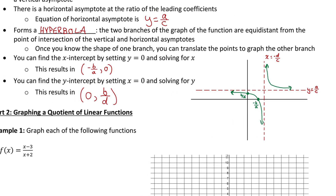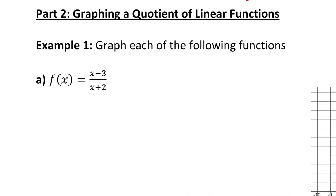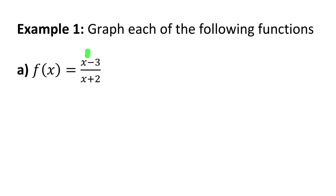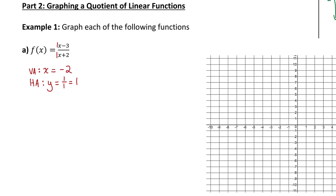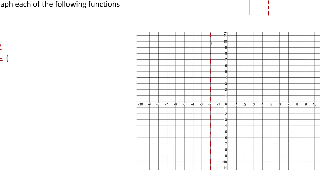Let's go ahead and graph two quotients of linear functions. The first one is x minus three divided by x plus two — both linear functions. Starting with the asymptotes: there would be a vertical asymptote at any x value that makes only the denominator be zero. An x value of negative two makes the denominator be zero and the numerator be negative five, so there's a vertical asymptote at x equals negative two. The horizontal asymptote is at the quotient of the leading coefficients, both one, so y equals one.